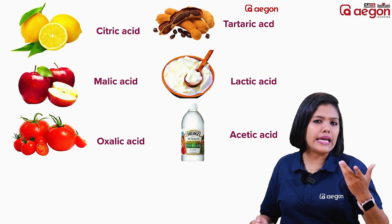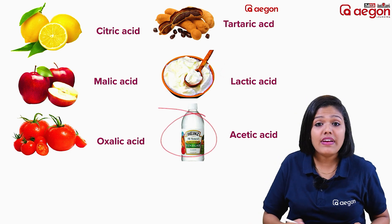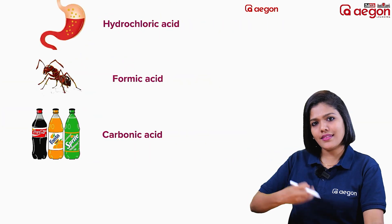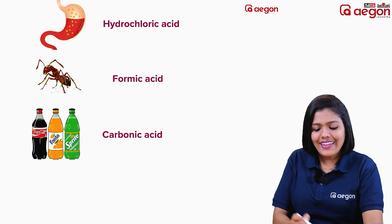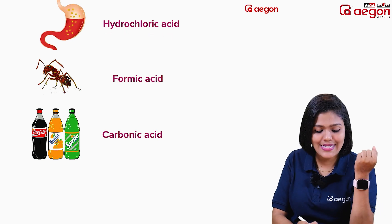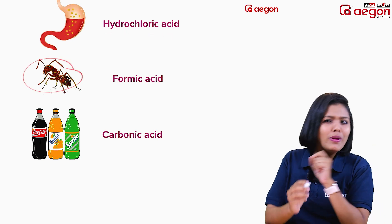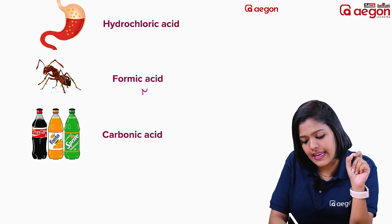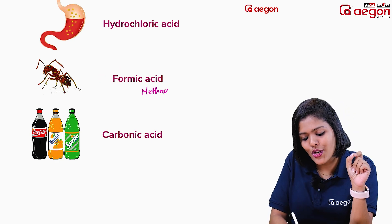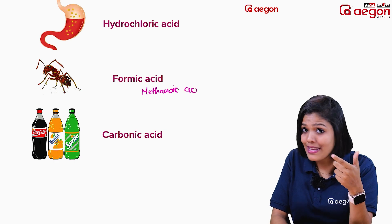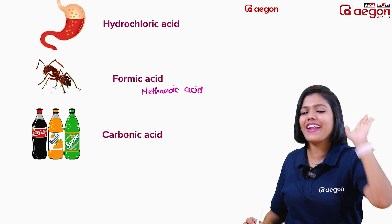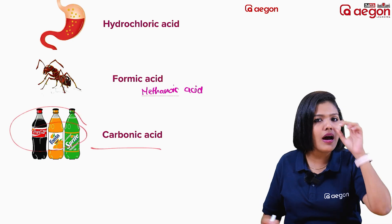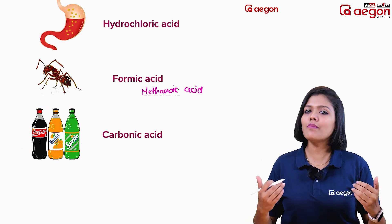Other acids: lactic acid is found in milk. Vinegar contains acetic acid. Hydrochloric acid is present in gastric juice. Formic acid, also called methanoic acid, is found in ant bites. Carbonic acid is also an important example.